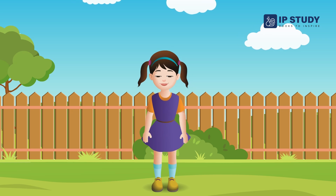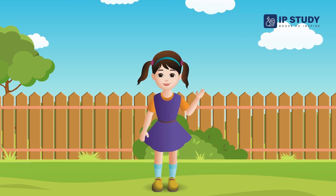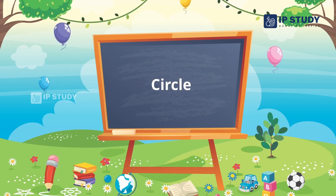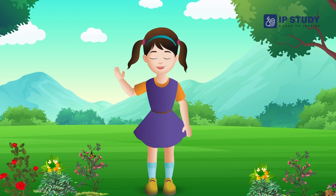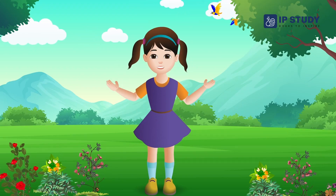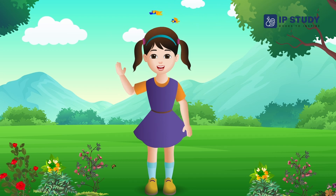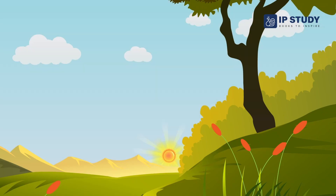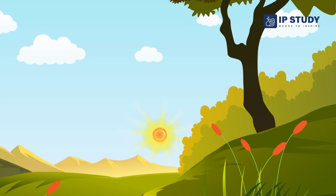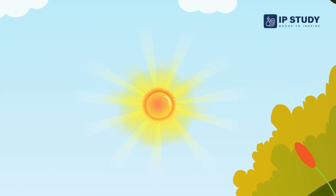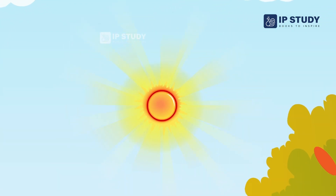Hello friends! Today we will learn about the circle shape. Have you seen the Sun? What shape is it in? The Sun is in circle shape. A circle is round in shape — it has no sides and no corners.